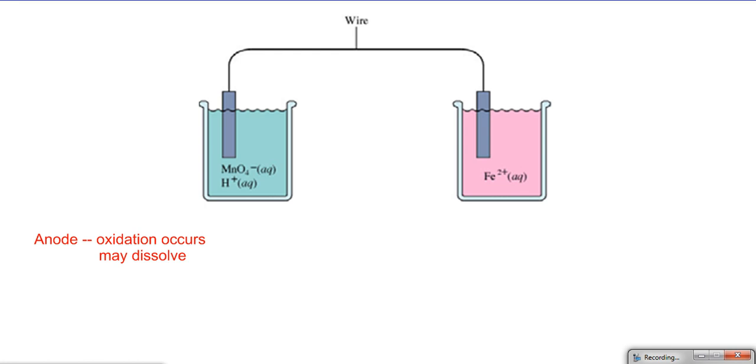So the anode may lose mass and therefore may appear to dissolve. Oxidation occurs at the anode. Reduction occurs at the cathode, and the cathode may appear to rust. This is because it's increasing in mass as the metal plates onto the metal cathode. If you're dealing with two ions changing, then you would want to pick an inert electrode such as graphite or platinum.